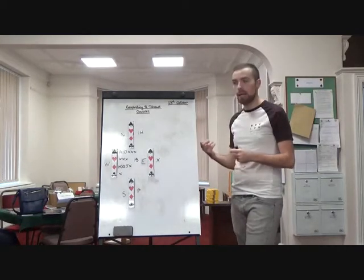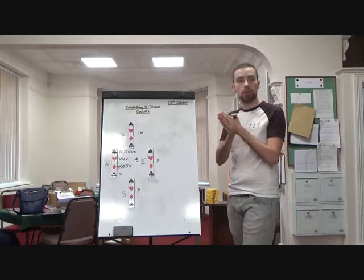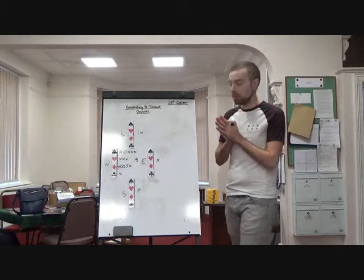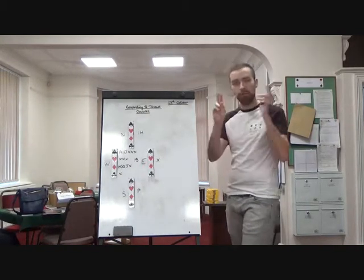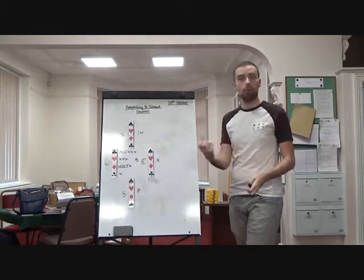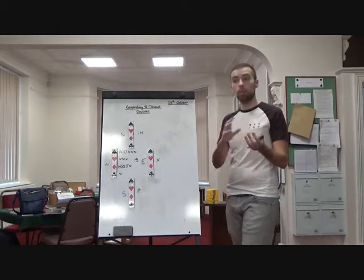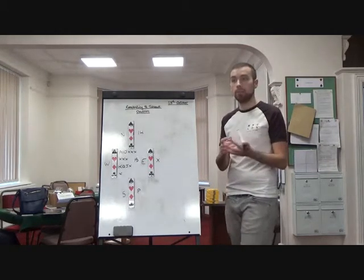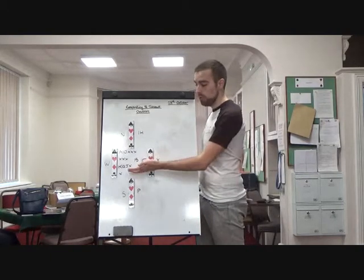So when you're responding to a takeout double, you can pretend your partner has opened one of your favourite suit. So your partner has opened, in inverted commas, one spade, what would you bid? If you think about it that way, you're pretty much in the right mark. So if partner opens one spade, what would we bid? Four spades.